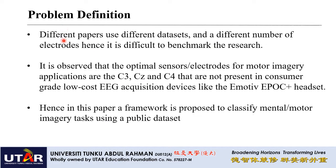Based on the literature review, we observed that different papers use different datasets and different numbers of electrodes, making it difficult to benchmark research. It is also observed that instead of using all electrodes on the headset, we can reduce the number of electrodes so that we can use consumer grade low-density EEG devices. Hence, our objective in this paper is to propose a framework to classify motor imagery tasks using a public dataset.